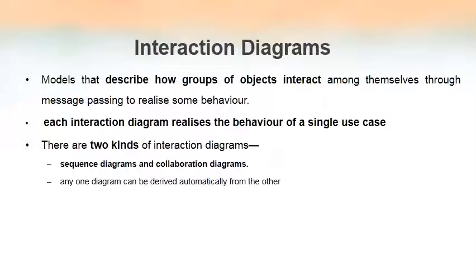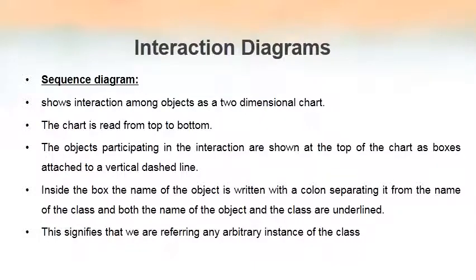When we talk about interaction diagrams, there are two types to consider: sequence diagrams and collaboration diagrams. The specialty of these diagrams is that if we know one, we can derive the other. For example, if we know the sequence diagram, we can draw the collaboration diagram from it, and vice versa. So first, we will see what a sequence diagram is.